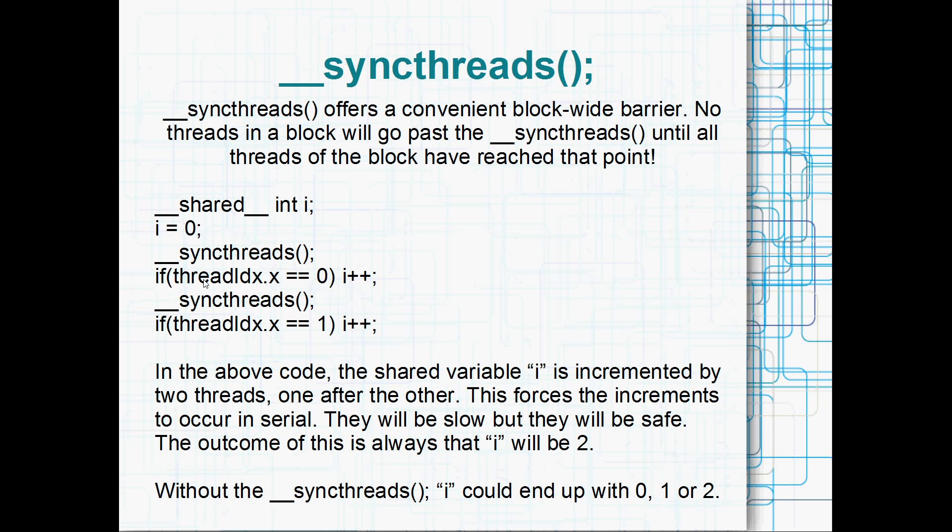So once every thread is set i to zero, they'll all come here to __syncthreads(), and once they all reach that point, they'll proceed. And the very next line is if threadIdx.x double equals zero, then increment i. So that's safe because only one thread in a block is going to have its index of zero. So only one thread is going to increment i, i is going to become one. And while that first thread of the block is incrementing i, the other threads are going to fall through here to __syncthreads(), they're going to sit there and wait for that first thread to finish incrementing i. At which point that thread there will come down to __syncthreads() also, which will mean that all threads in the block have reached that point, and from there they'll all proceed together.